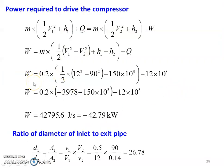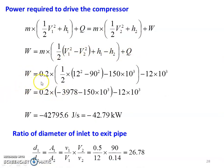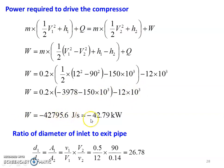Using the Steady Flow Energy Equation: M × [(1/2)V1² + H1] + Q = M × [(1/2)V2² + H2] + W. Rearranging: W = M × [(1/2)(V1² − V2²) + (H1 − H2)] + Q. Substituting: W = 0.2 × [(1/2)(12² − 90²) + (−150 × 10³)] − 12 × 10³. First term = −3978, second term = −150 × 10³. Result: W = −42,795.6 J/s = −42.79 kW. That is the power input to the compressor.